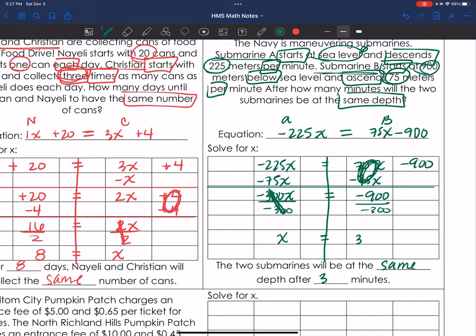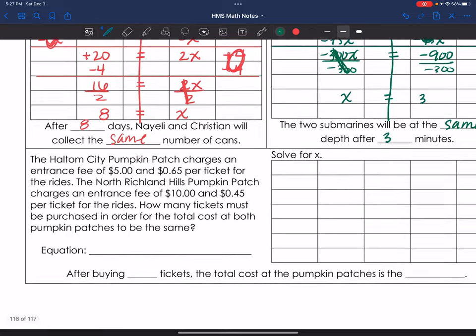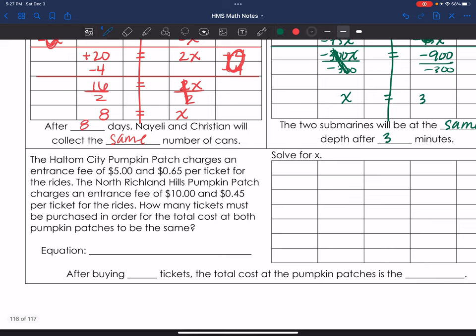Okay, if you guys want to solve it with that extra step in there, that is totally your choice. It's all groovy if you do. Last one. Let's go through the Haltom City Pumpkin Patch. Well, they charge an entrance fee. I know that's my additive. $5.65 per ticket. The North Richland Hills. Okay, so I have Haltom and I have North Richland Hills.